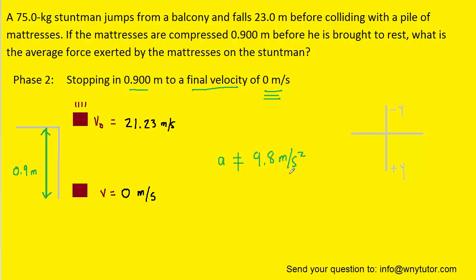Well it's because the stuntman is not in free fall during phase 2. He is colliding with a set of mattresses so he is no longer falling freely through the sky. So we actually need to find the acceleration for phase 2.